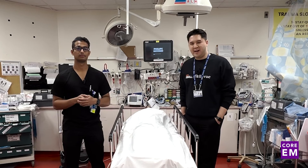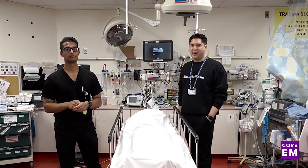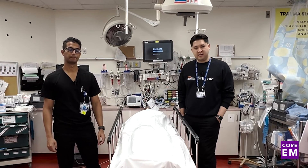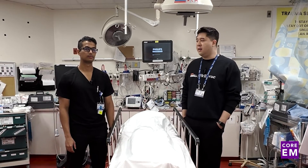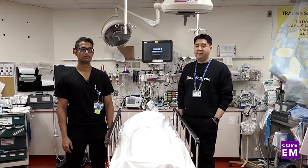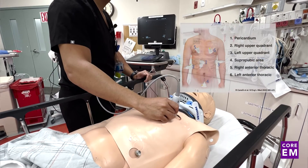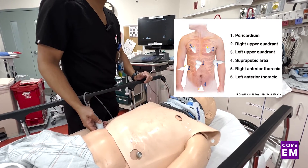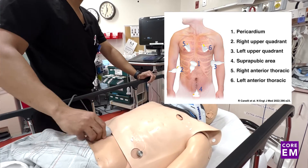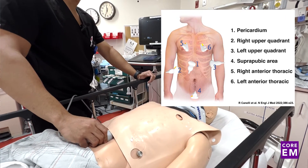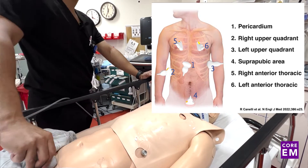After the primary survey and before the secondary survey, you may choose to do some adjuncts. For us, that means a chest X-ray, usually a pelvis X-ray as well, and an eFAST exam. It's important to remember that if the patient is hypotensive and you have a positive eFAST, you may need to take the patient to the operating room rather than the scanner, if you have access to an OR.